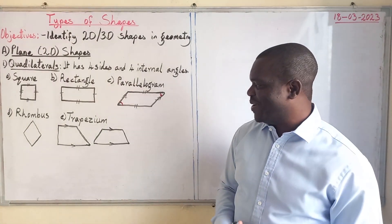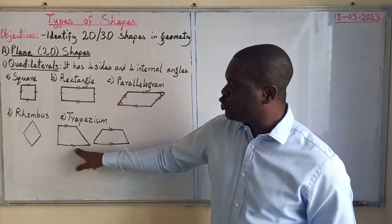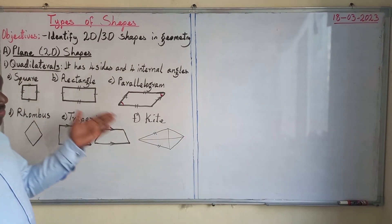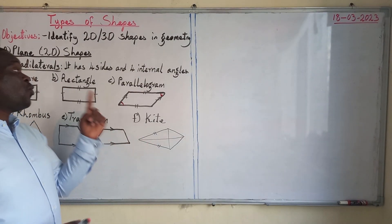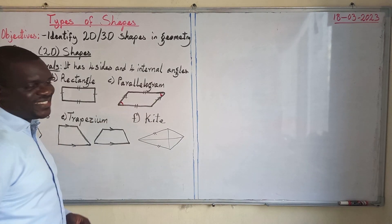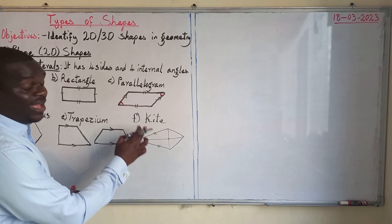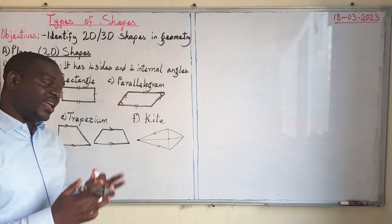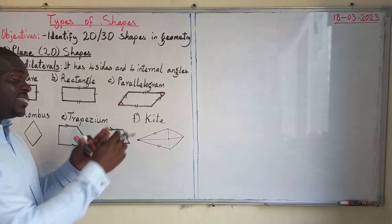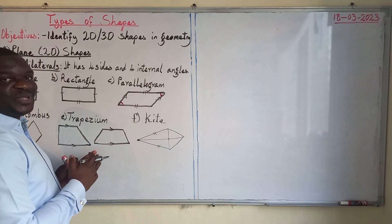The fifth type of quadrilateral is called a trapezium. A trapezium has two parallel sides and a height. The last quadrilateral we'll look at is a kite — with a kite, the two pairs of adjacent sides are congruent, and the diagonals intersect at right angles.